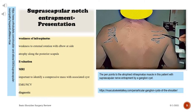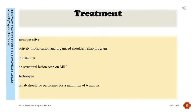Infraspinatus weakness presents as weakness to external rotation with the elbow at the side, with atrophy along the posterior scapula. Evaluation: MRI is important to identify a compressive mass with associated cyst; EMG/NCV is diagnostic. A figure shows the pen pointing to the atrophied infraspinatus muscle in a patient with suprascapular nerve entrapment by a ganglion cyst.